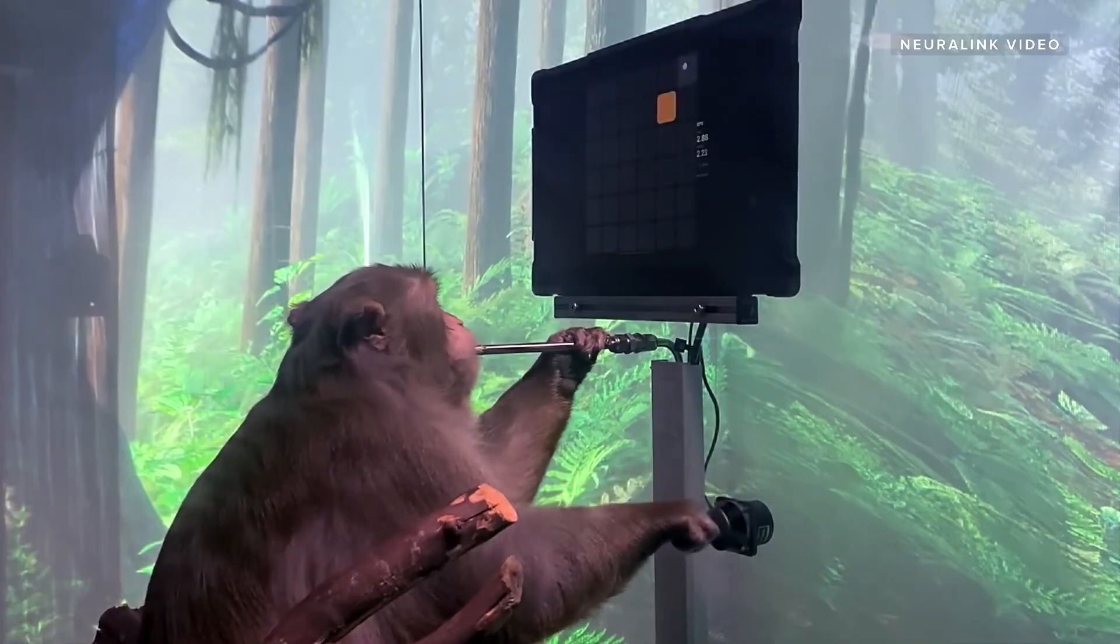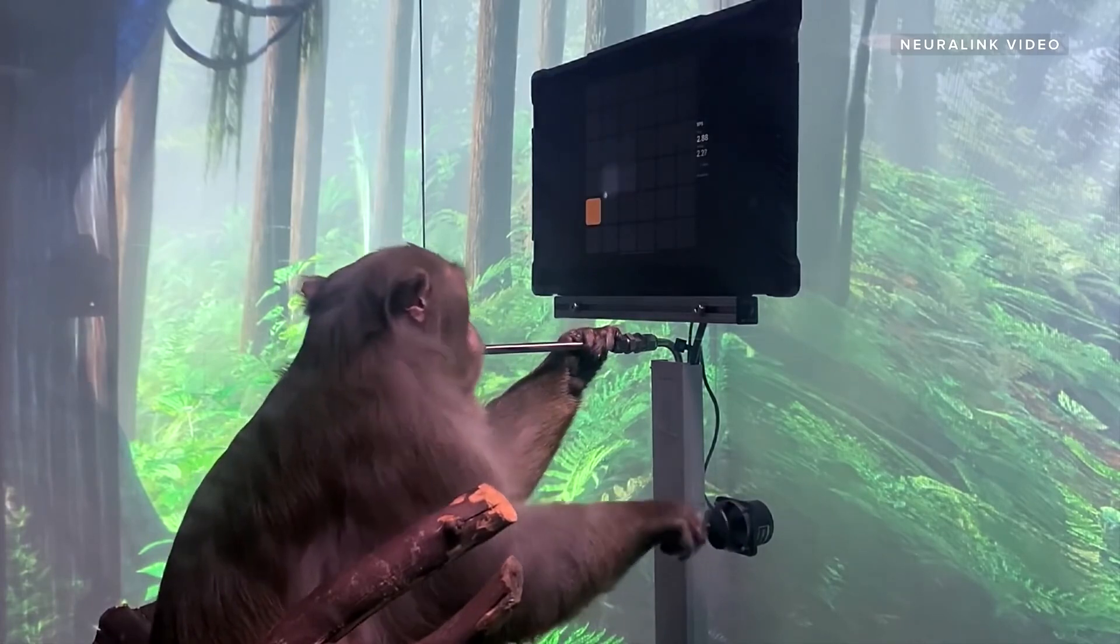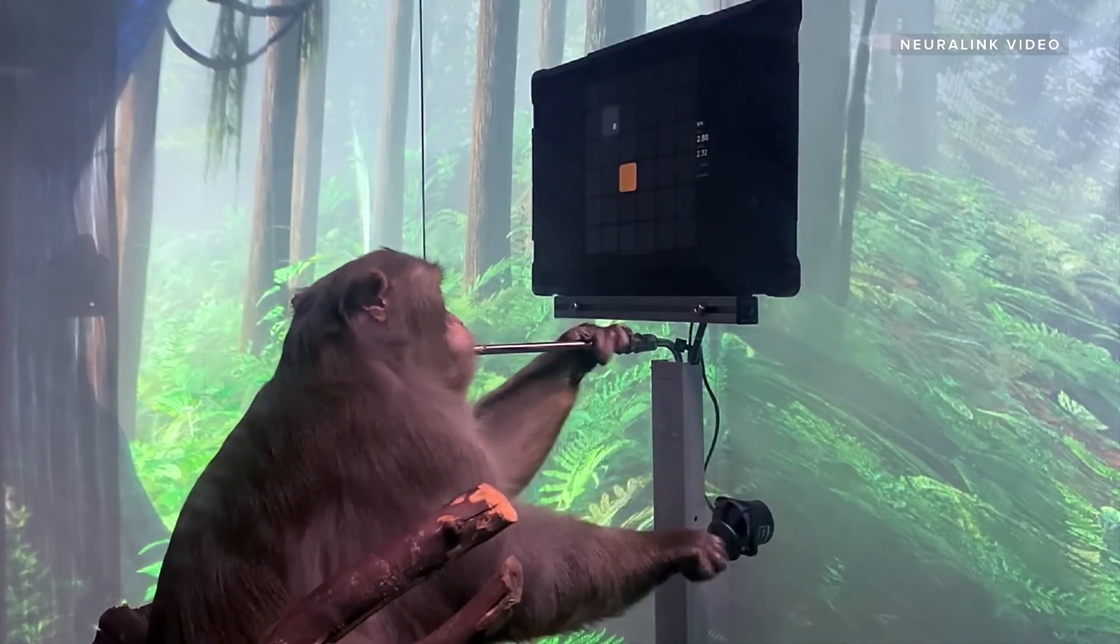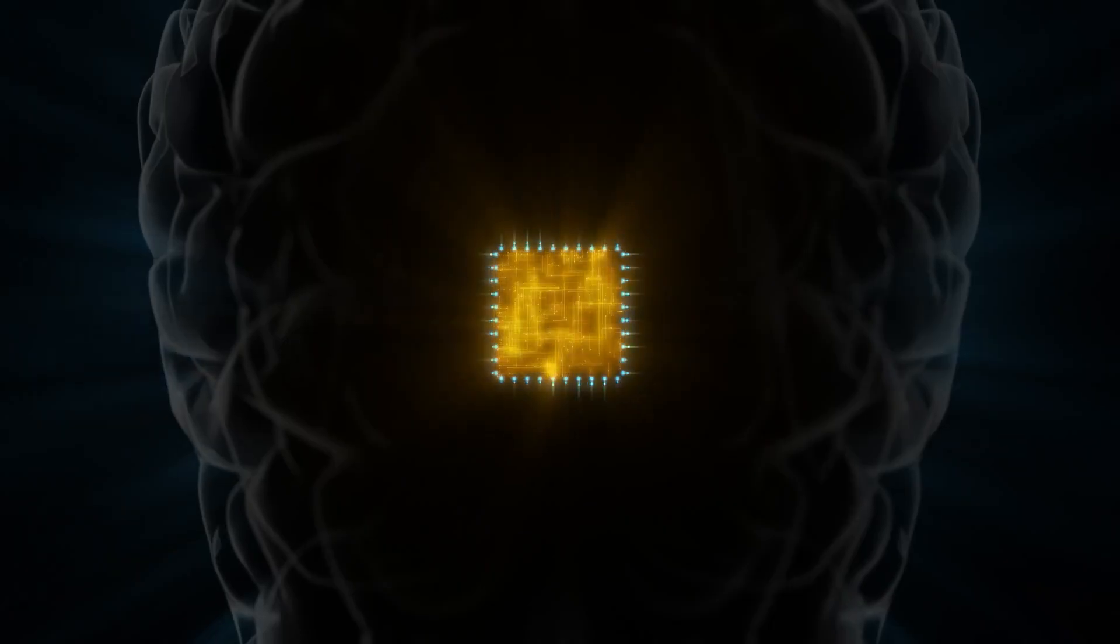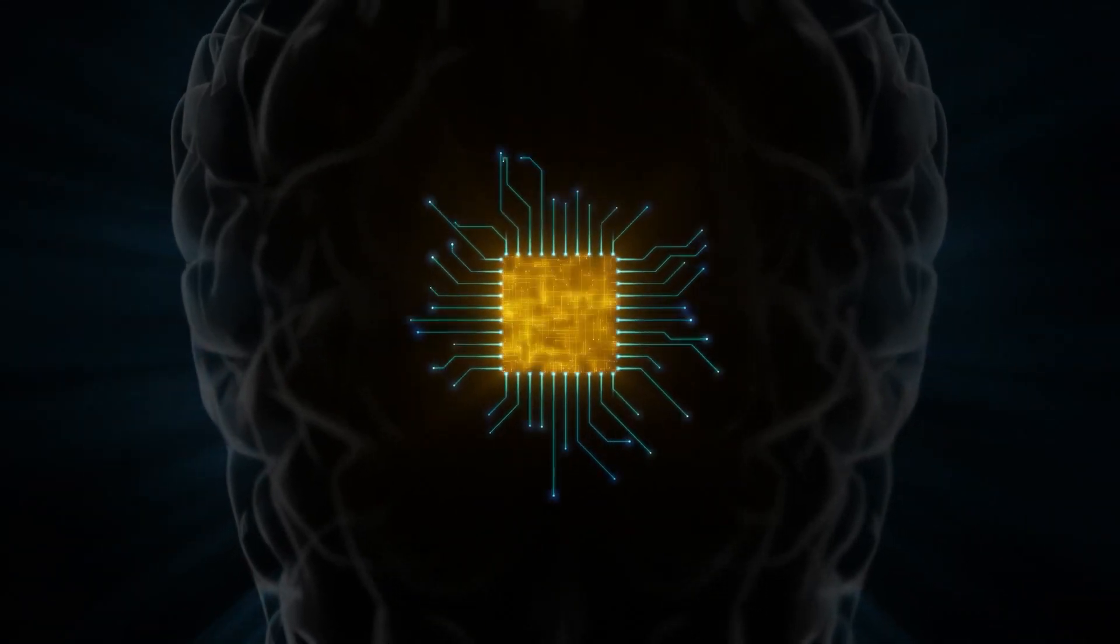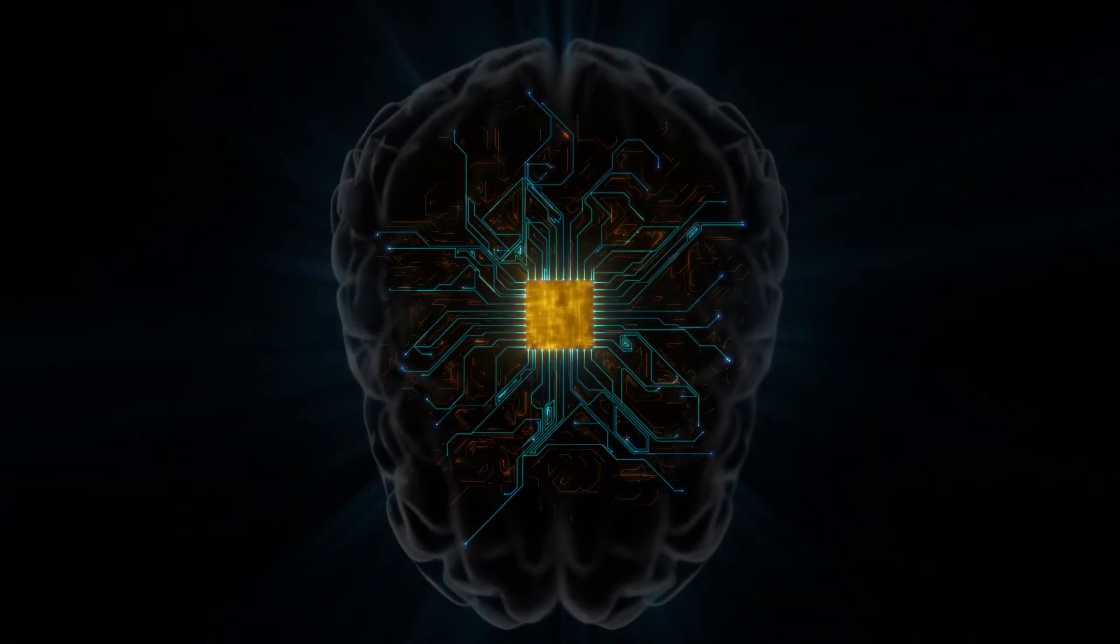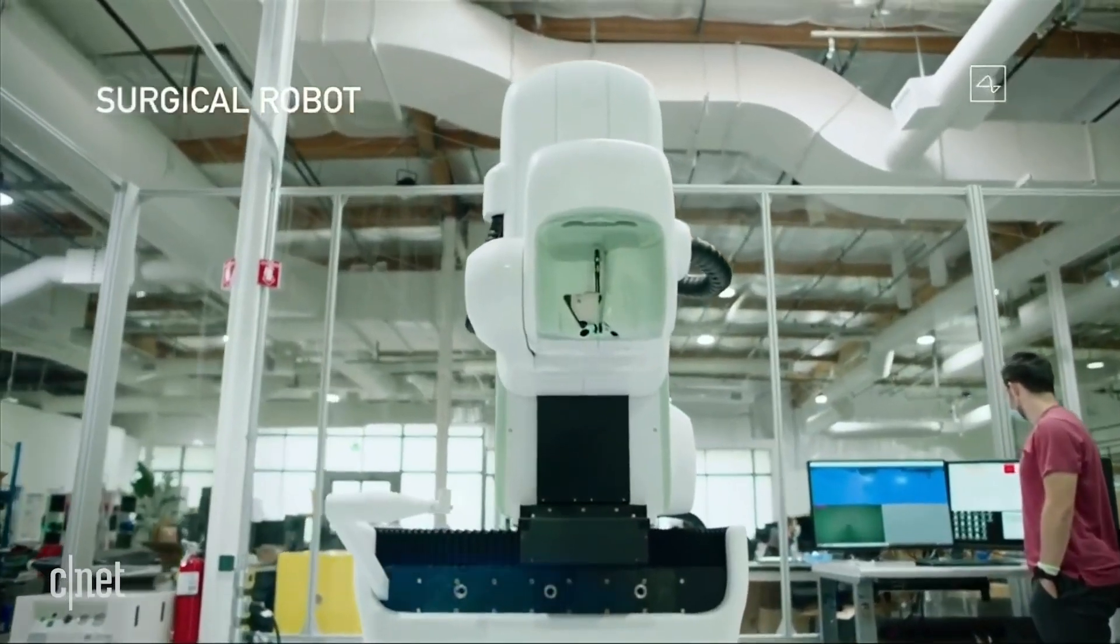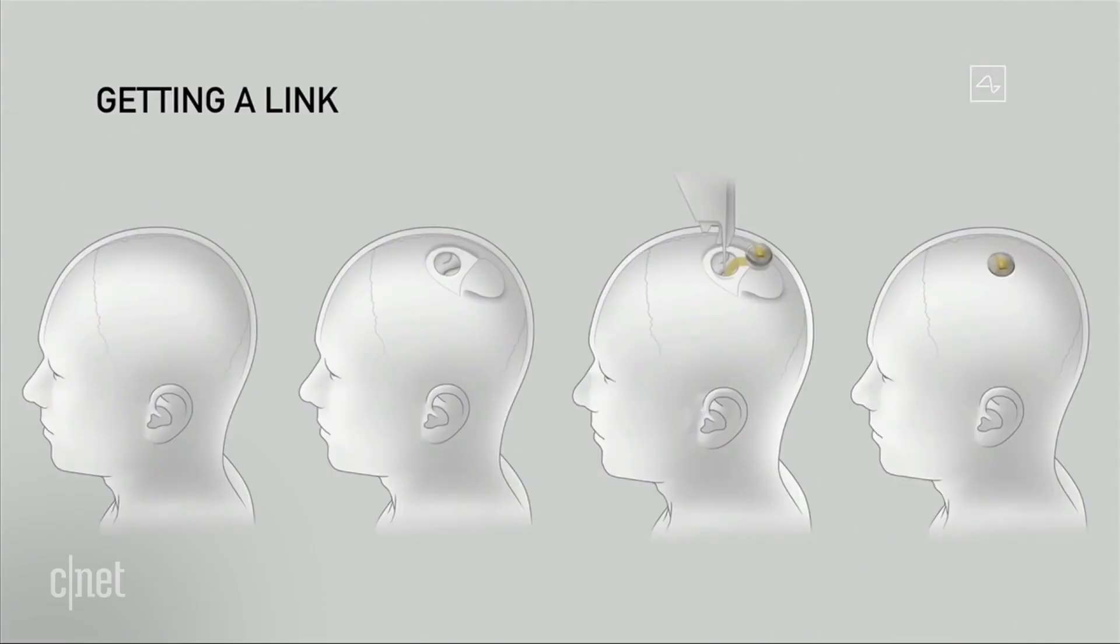Neuralink has also said it is developing technology that can enhance healthy brains, for example, by improving memory or allowing for direct communication between brains. The company has been conducting research and development in this field. While it is still in its early stages, the potential benefits of this technology are significant and could have a profound impact on society in the future.